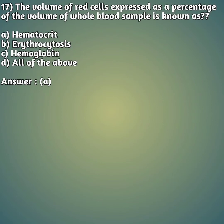Question 17: The volume of red cells expressed as a percentage of the volume of the whole blood sample is known as — option A: hematocrit, also called PCV (packed cell volume), option B: erythrocytosis, option C: hemoglobin, option D: all of the above. The right answer is option A, hematocrit.